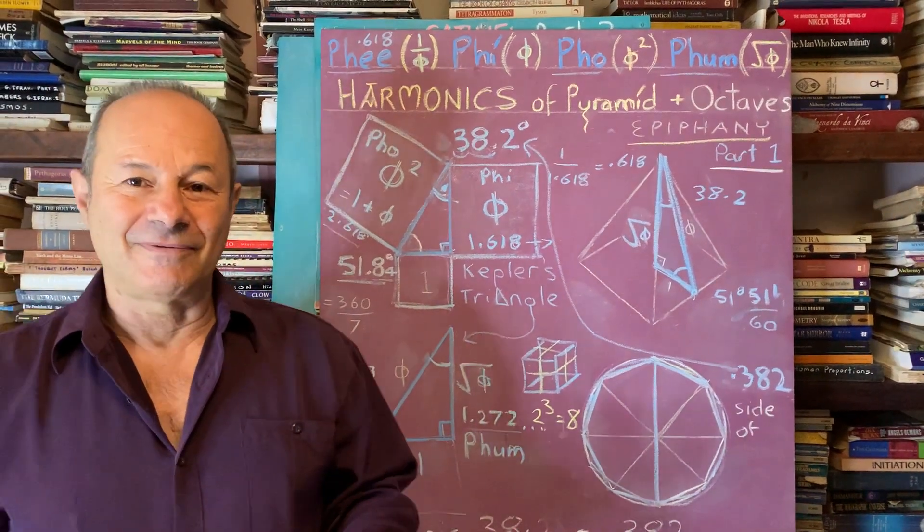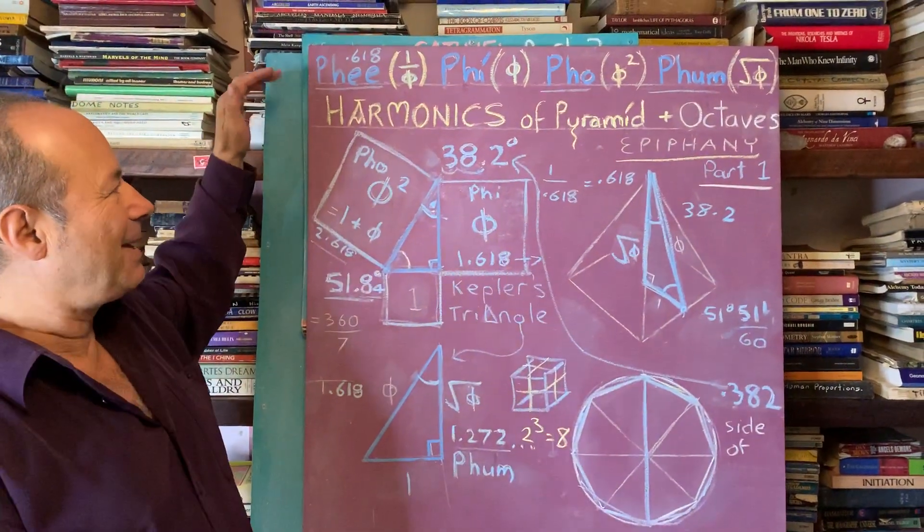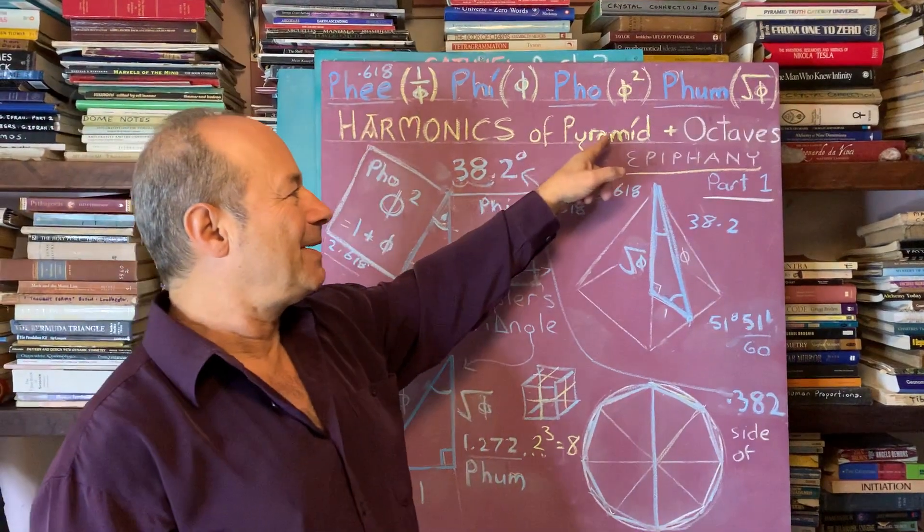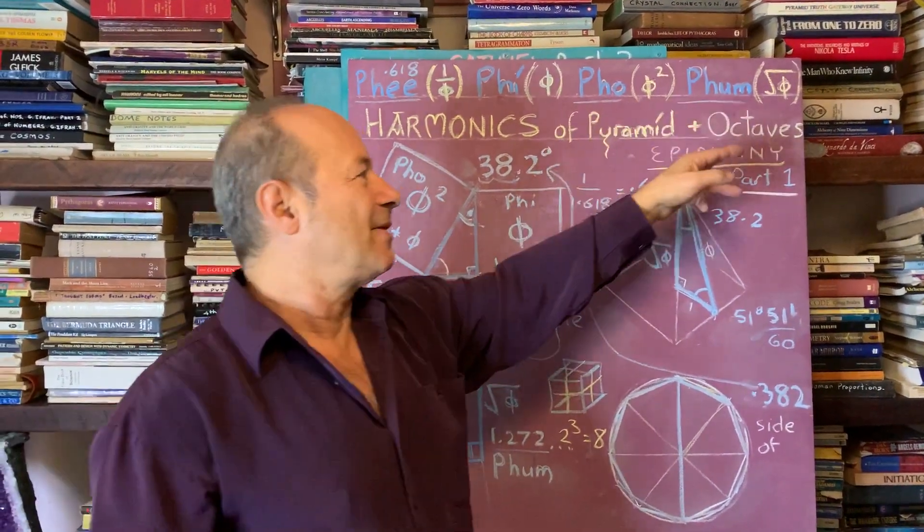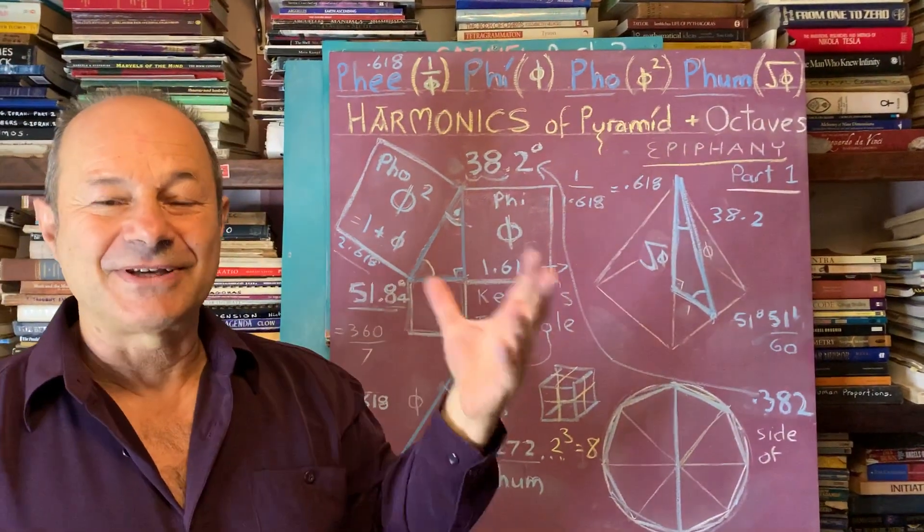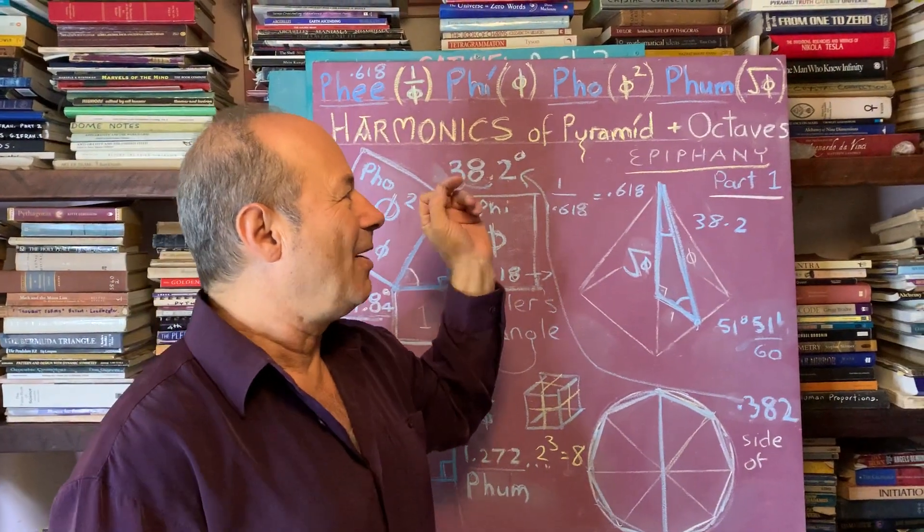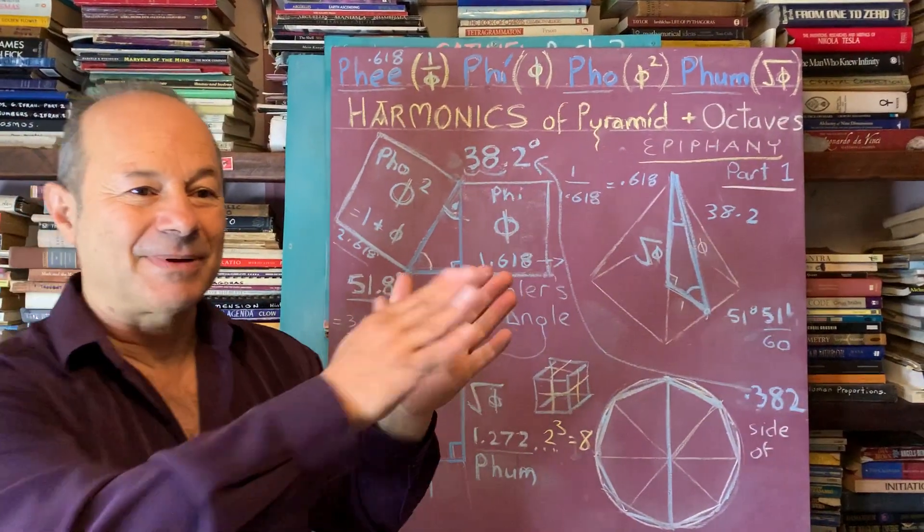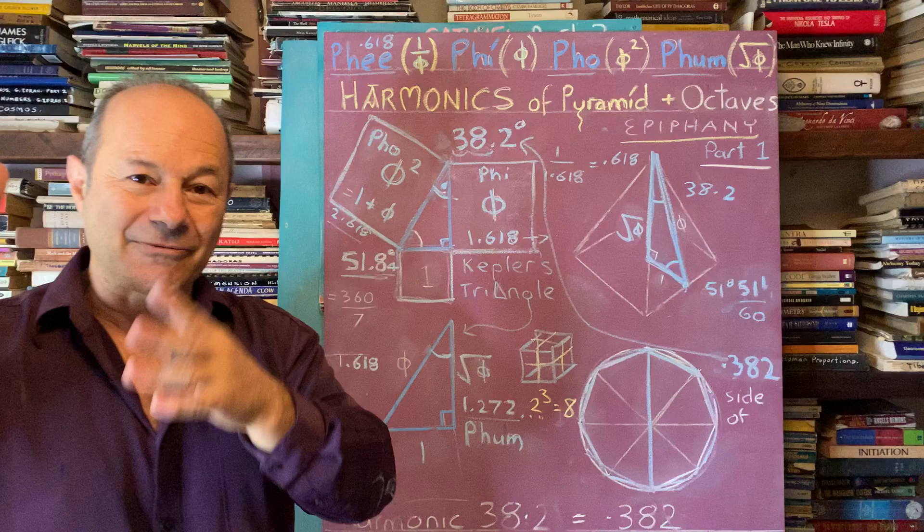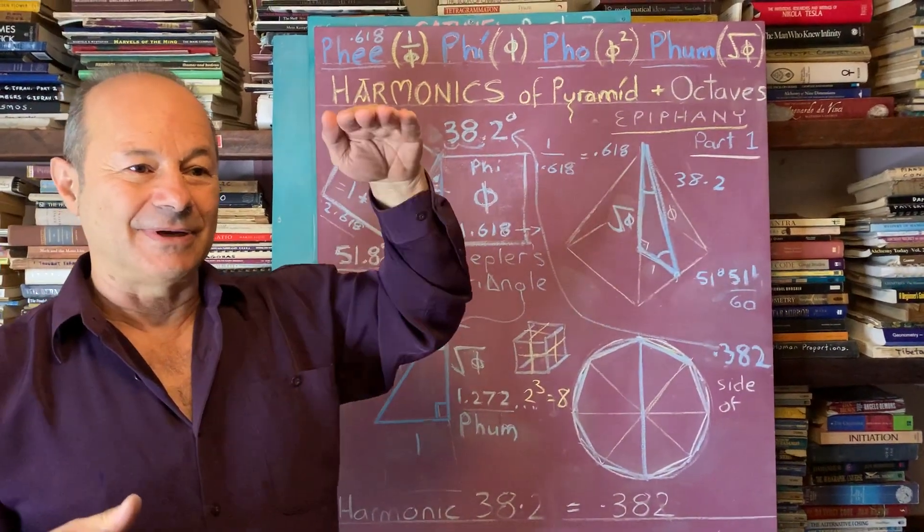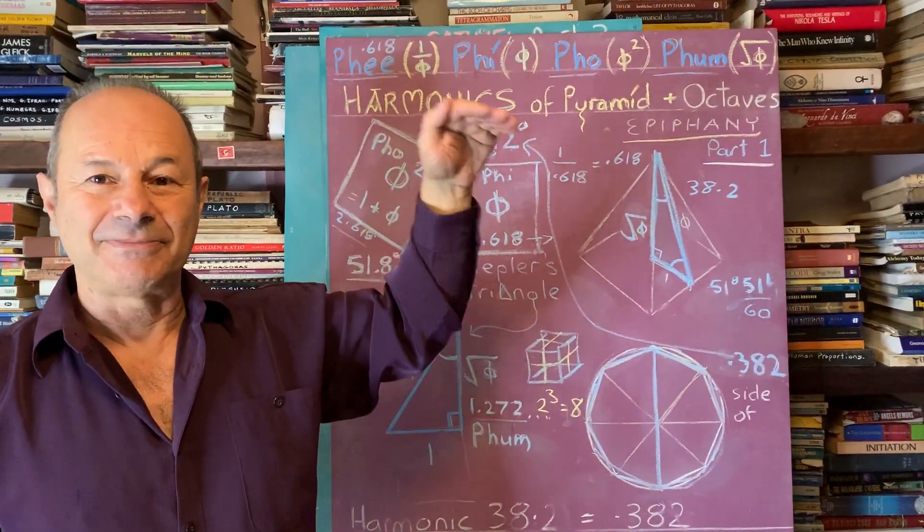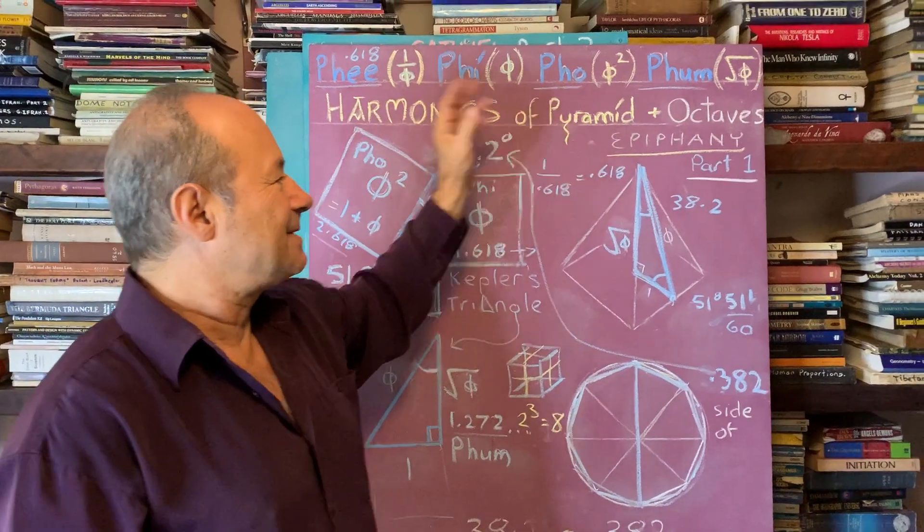Welcome to part two of a two-part series. I've just been talking about the harmonics of the pyramid and how it relates to the octavization of the physical world. Octaves, as you know in music, is a completion of the eighth note that repeats itself. Octaves take us to another level or another dimension of existence.